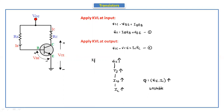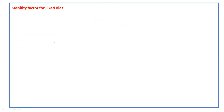The transistor will be in an unstable condition. To stabilize this operating point we are using fixed bias. We'll now see if fixed bias is suitable or not. The reason the operating point shifts upwards was already explained with equations in the need-of-biasing video. Now we'll see the stability factor of the fixed bias.